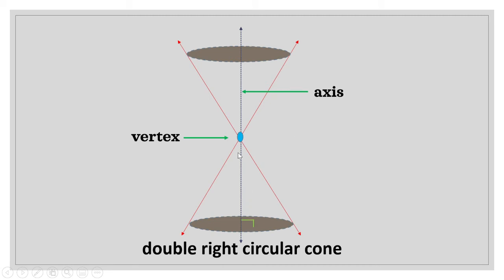Also, this axis forms a right angle with the base of the cone. So how do we generate conic sections? Let's say we have this double right circular cone, and then we have our plane.